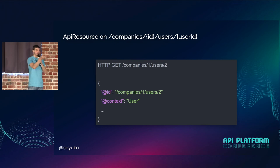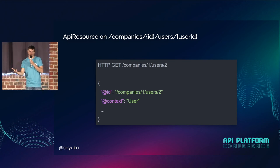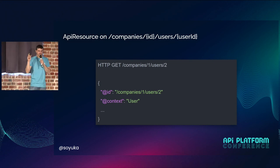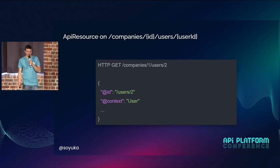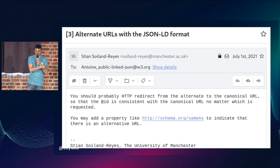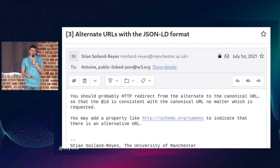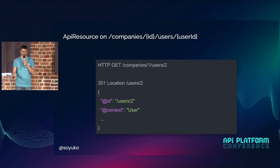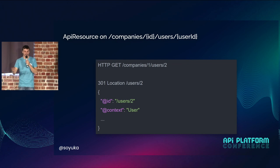About this: let's take an example where we call companies/ID/users/userID. The resource behind it is a user. I was wondering if in JSON-LD we should return the IRI as companies-1/users-2, or maybe just users-2 because in fact it is a user. I asked the JSON-LD mailing list, and Stan Soylent Reyes from Manchester University answered that it would probably be best to do a redirection and that the URL shouldn't change. So we would have something like this where you call companies-1/users-2, get a 301 with the new location and the correct IRI behind it.